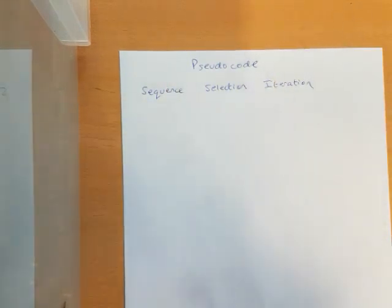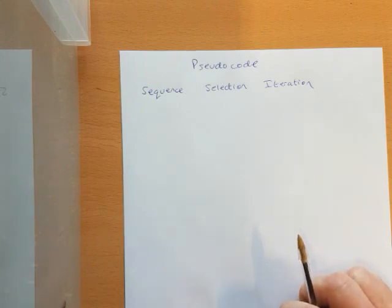So we've got these concepts: sequence, selection, iteration, and there's usually a question asking you to explain. So you can probably use most of these, also being able to explain them and perhaps give an example as well. So the first one is sequence.